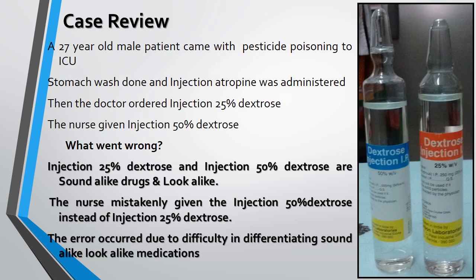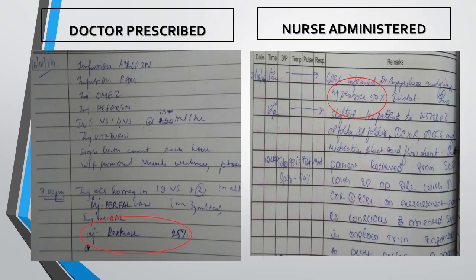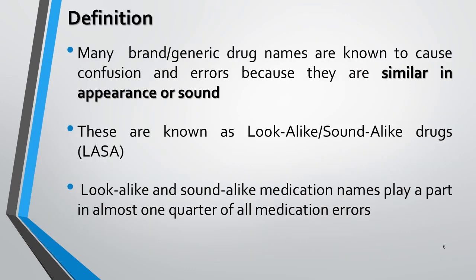In this case review, errors occurred because of difficulty in differentiating sound-alike and look-alike drugs. Instead of giving injection 25% dextrose, the nurse administered injection 50% dextrose, which are look-alike and sound-alike to each other. The right column shows 25% injection dextrose prescribed by the doctor, while the left column shows 50% injection dextrose administered and written by the nurse.